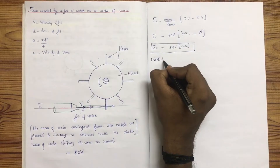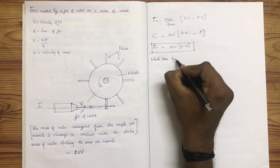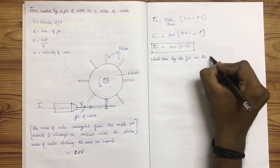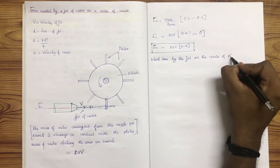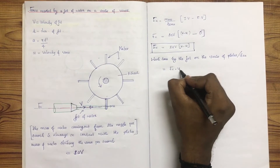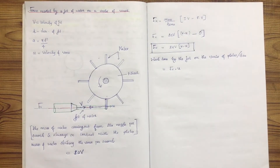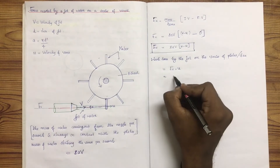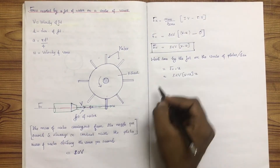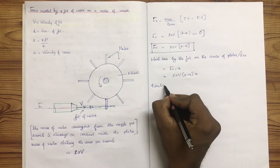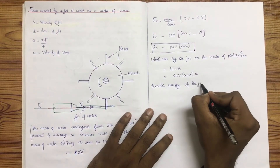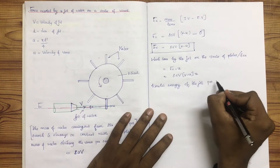For work done by the jet on the series of plates per second, work done equals Fx into U. So work done per second equals ρAV(V − U) into U. This gives us the kinetic energy of the jet per second.